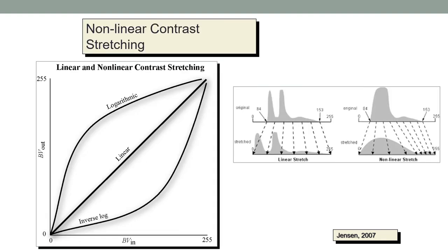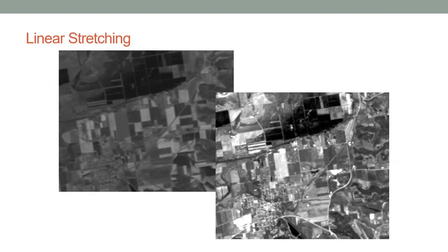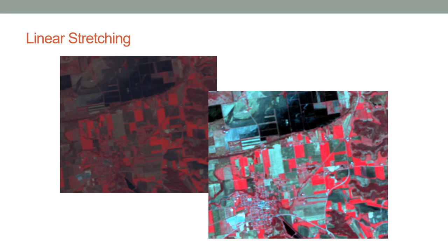Nonlinear contrast stretching differs from linear stretching in that the entire histogram is not stretched proportionally — parts of the histogram are stretched more than others depending on the particular application. Here is some imagery showing an original image versus a linearly stretched image, demonstrating how contrast enhancement increases such that the human eye can more clearly discern differences between features on the ground. Another example shows a multispectral image after a linear stretch, making it more amenable to human interpretation.